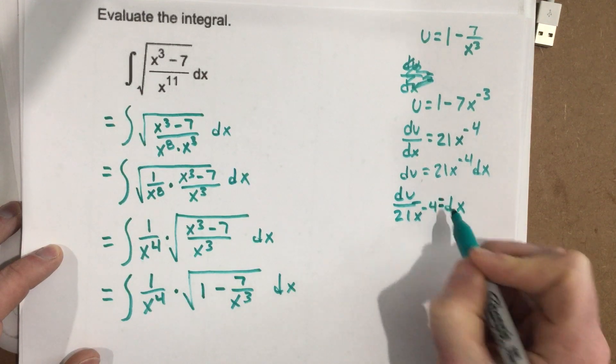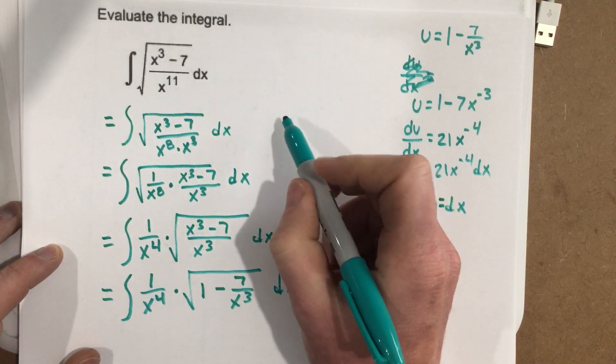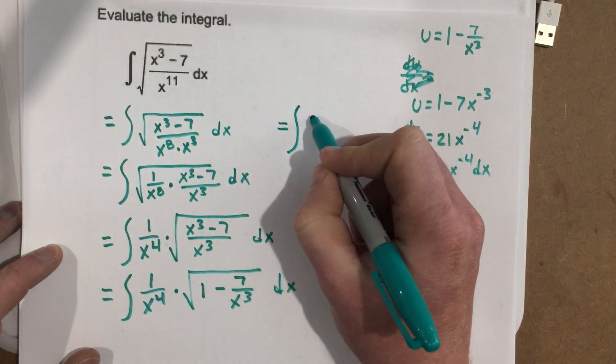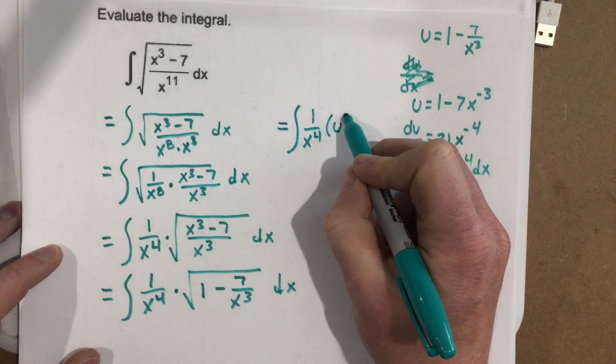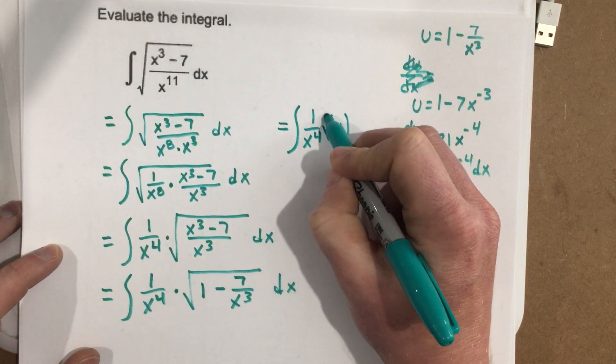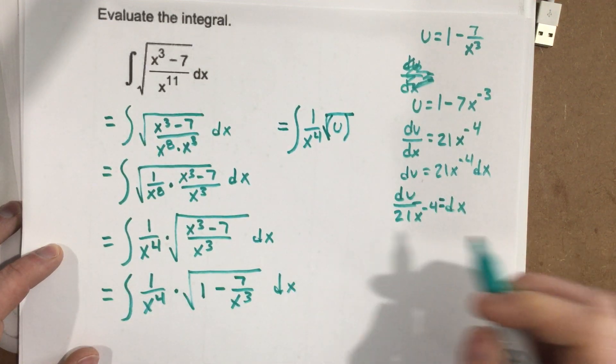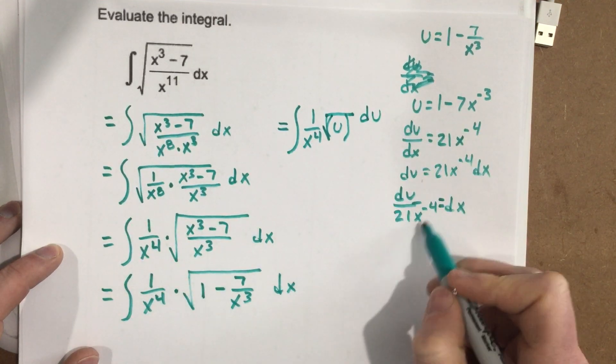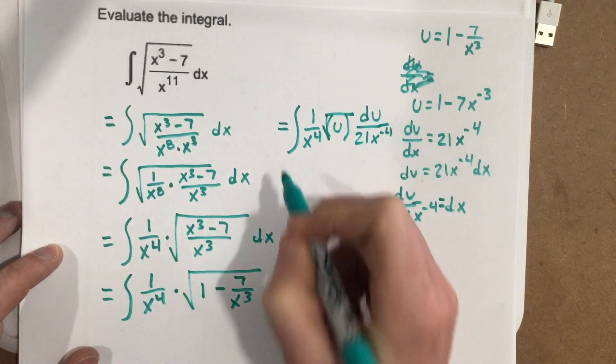And now I can substitute this part into this part of the integral. So I'm going to write that here. So this equals the integral of 1 over x to the fourth. This is now u. We're going to write that as root u. And then that is du, when I substitute dx, I get du over 21x to the negative 4.